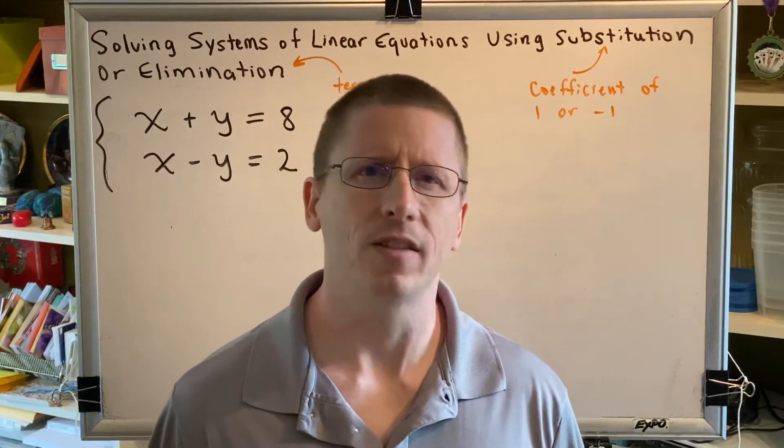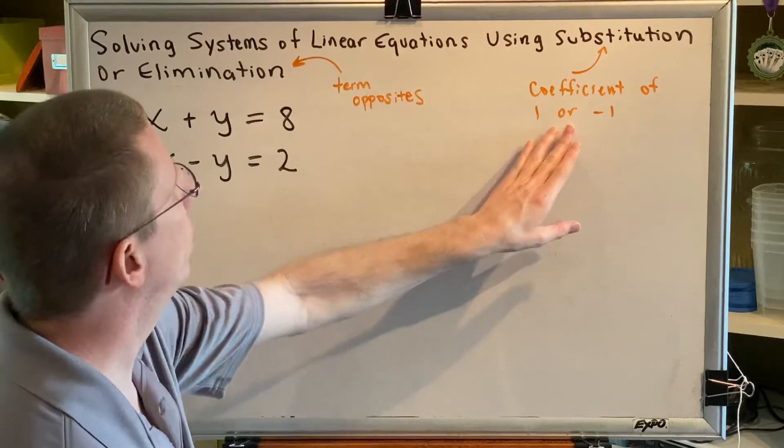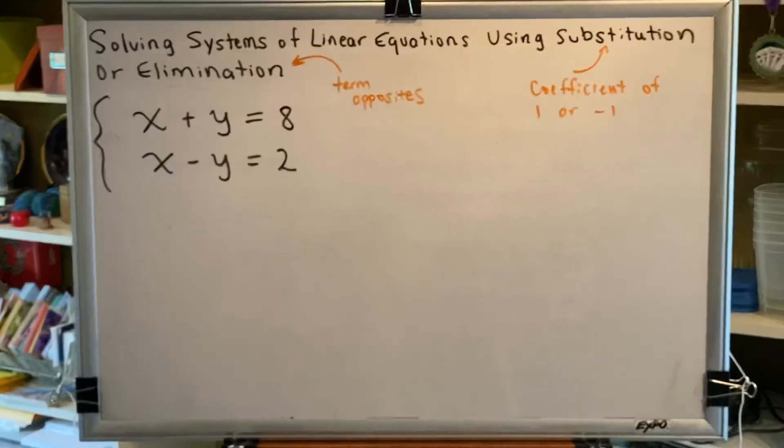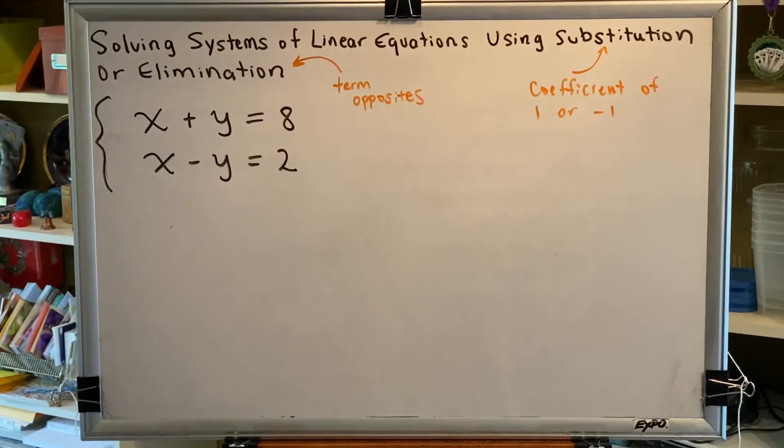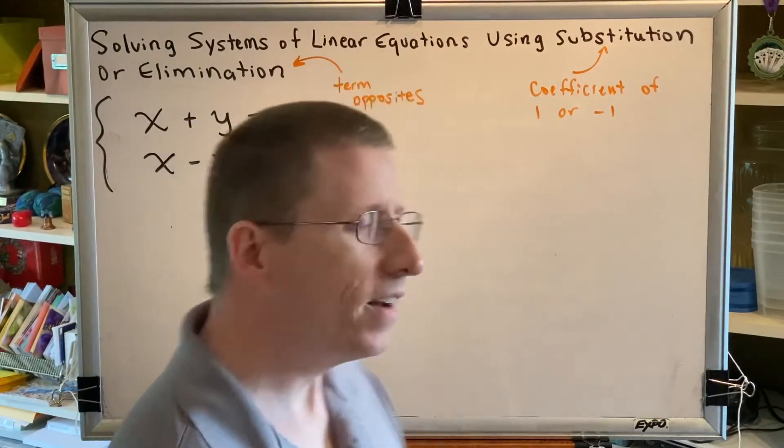I'm going to give you a few seconds to think about it. Think about the steps you would go through for substitution and the steps that you would go through for elimination. Which method do you think would be easier, faster, better for this problem? Alright, have you come up with your opinion? Let's find out.